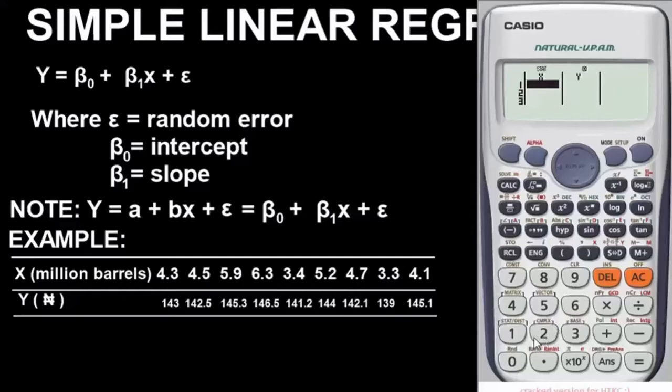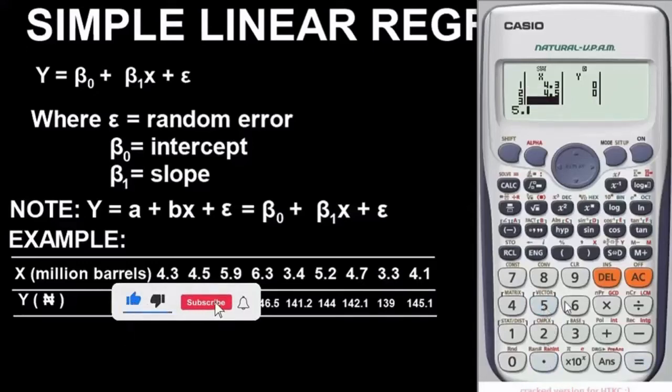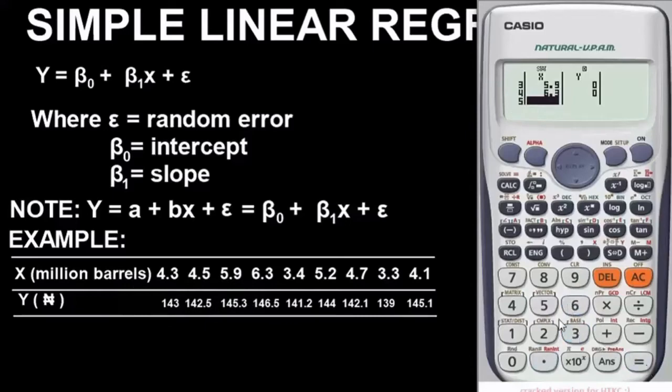Let's start from X values. The values for X in this question, under million barrels, we have it to be 4.3, 4.5, 5.9, 6.3, 3.4, 5.2, 4.7, 3.3, and lastly we have 4.1. Alright, very interesting.